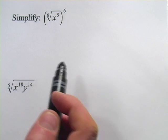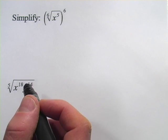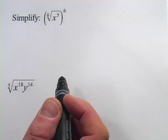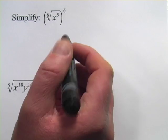In these problems, we've got some big messy looking things with radicals and exponents, and we're being asked to simplify them. So let's see what we can do to make this as simple as possible.